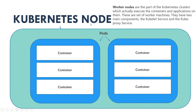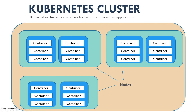Let me explain what a node is. Worker nodes are the part of the Kubernetes cluster which actually execute the containers and applications on them. They are a set of worker machines. Each worker machine, each server, has two main components: kubelet and kube-proxy service.